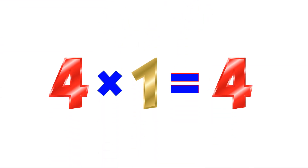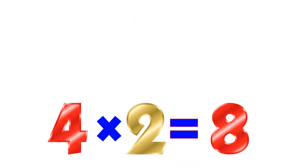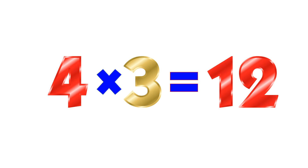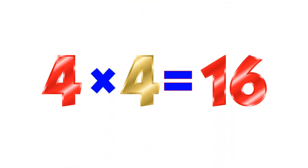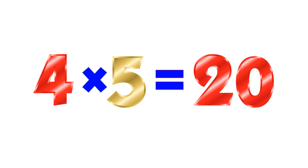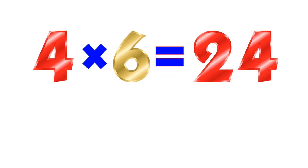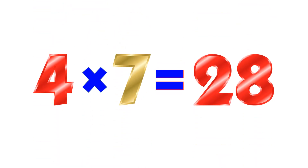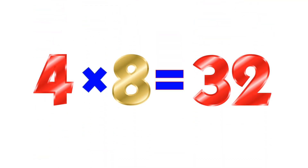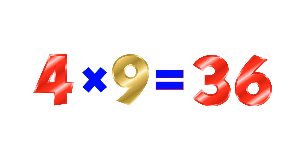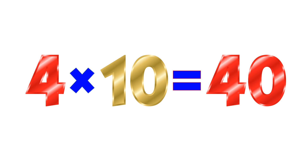Table of 4. 4×1=4. 4×2=8. 4×3=12. 4×4=16. 4×5=20. 4×6=24. 4×7=28. 4×8=32. 4×9=36. 4×10=40.